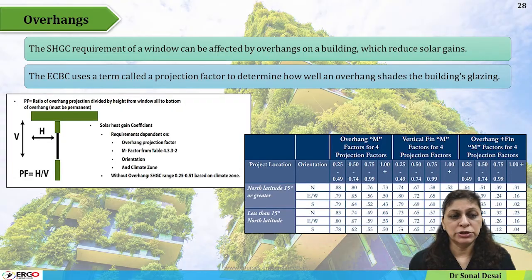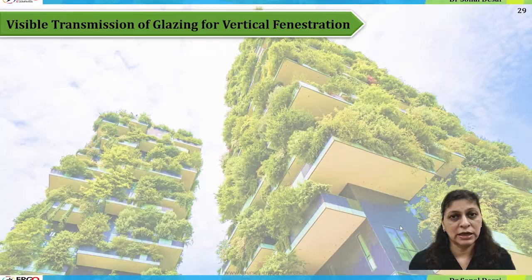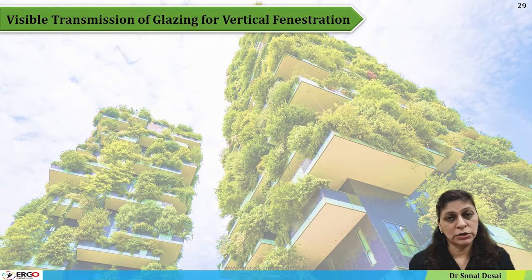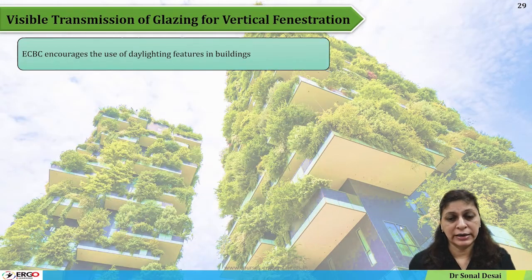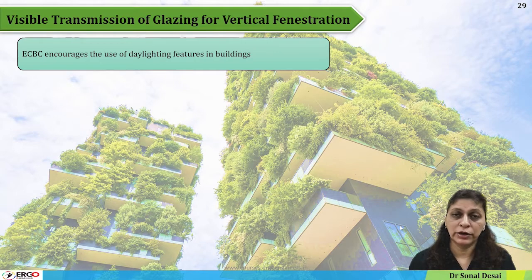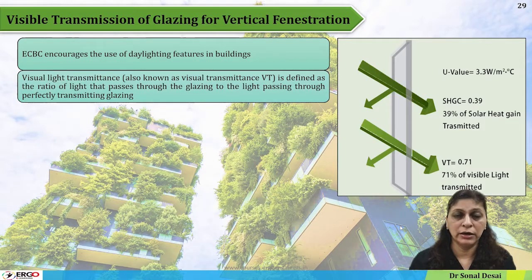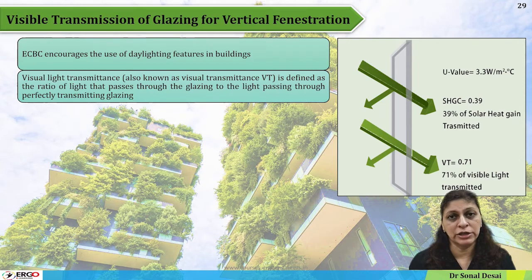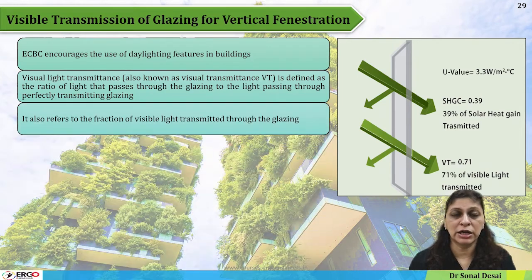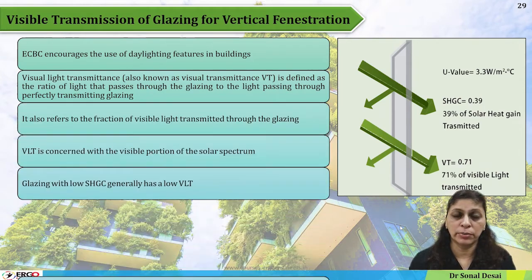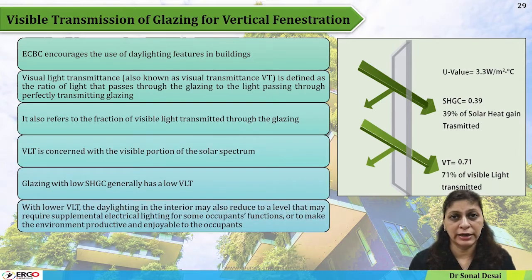Visible transmission of glazing is very important when selecting glazing. It is explained from fundamentals — what it is and how it can be reduced for a particular application — while ensuring it does not compromise the lighting level requirement.